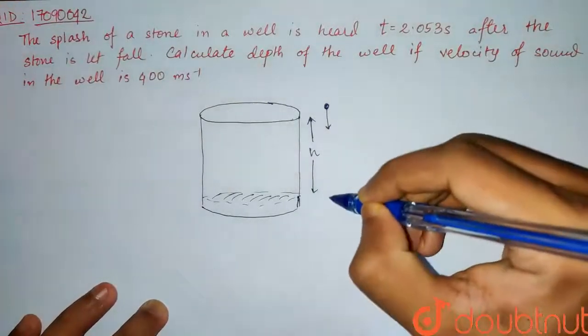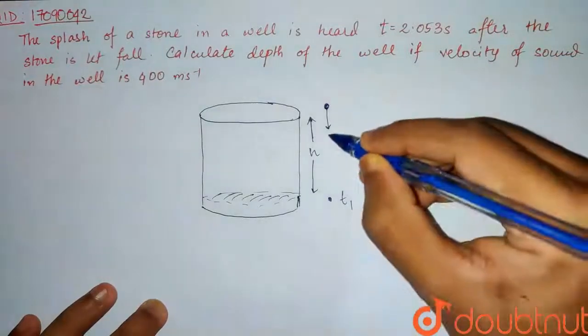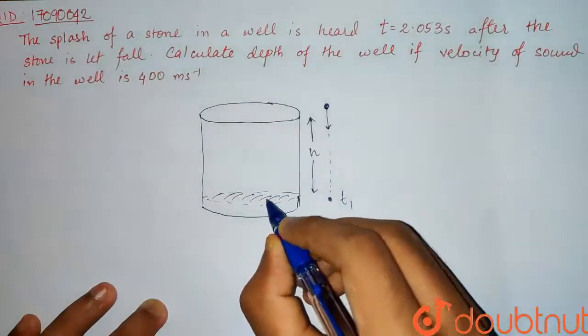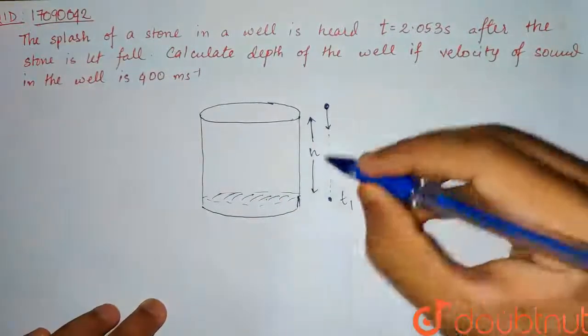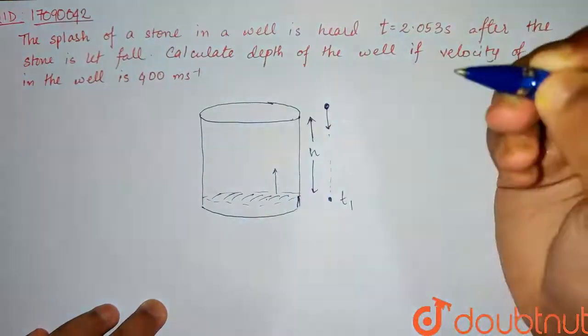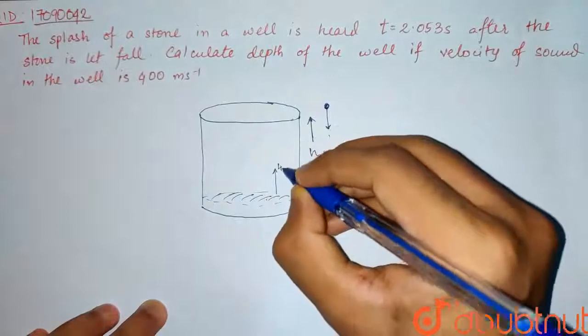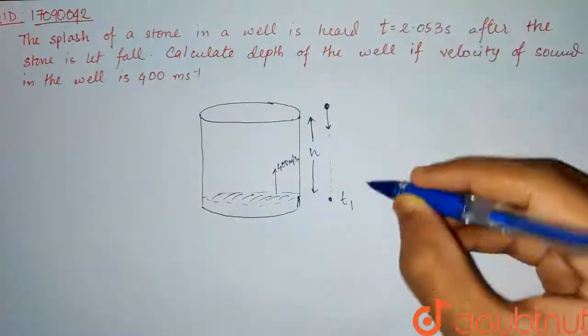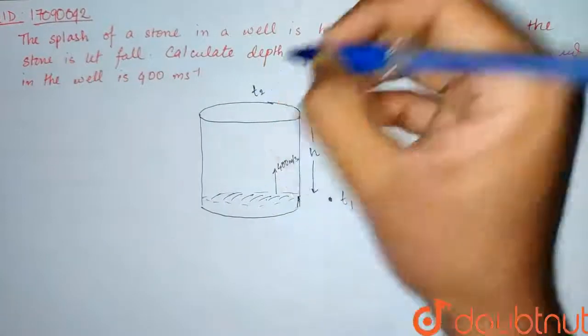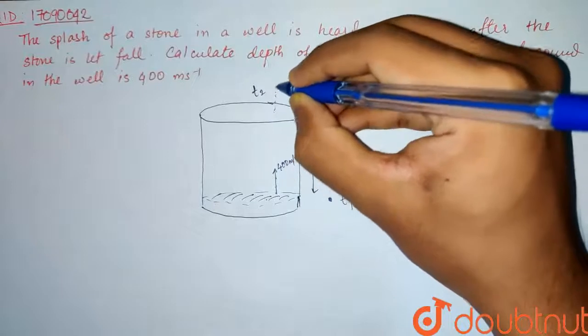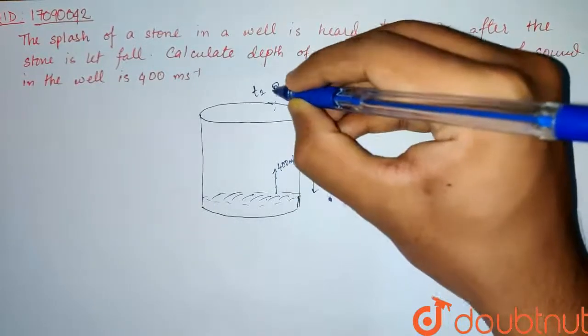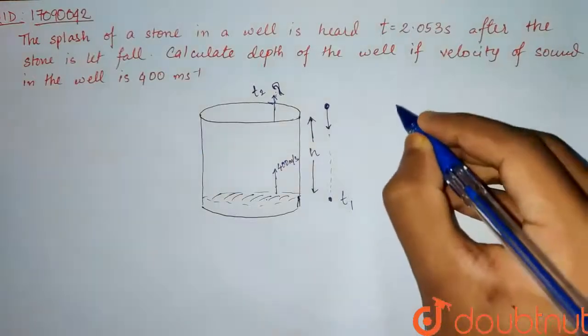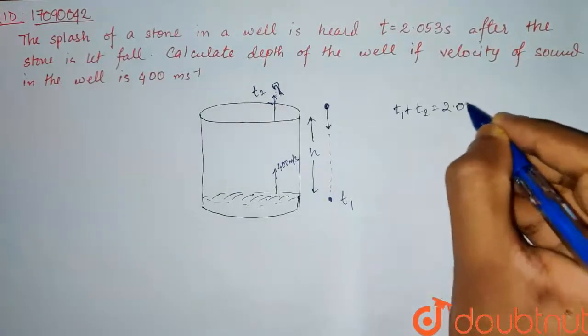So after t1 time, after t1 seconds, this sound will reach us at a speed of 400 meters per second. And some time, after t2 seconds, this sound will reach us. Right? Suppose that our ears are here. After t2 seconds, this sound will reach us. And we have given t1 plus t2 is equal to 2.053 seconds.